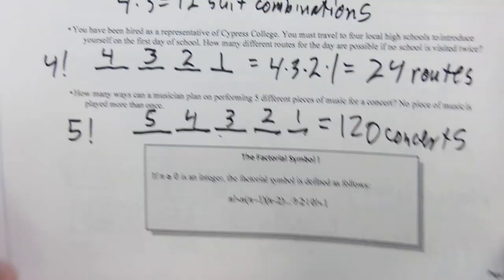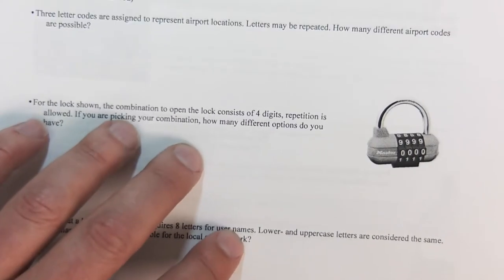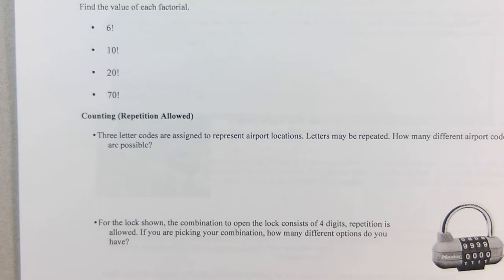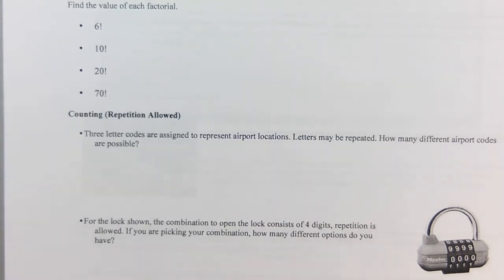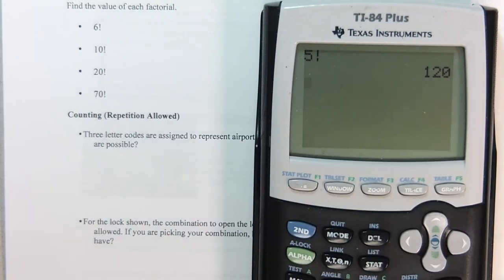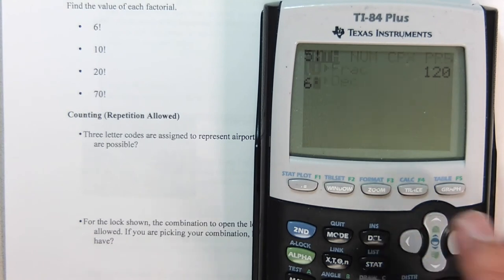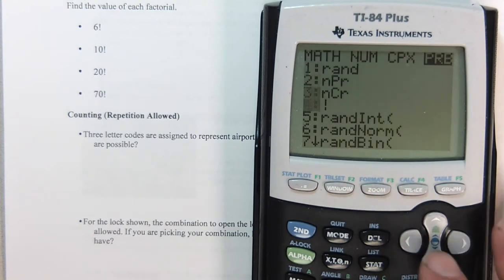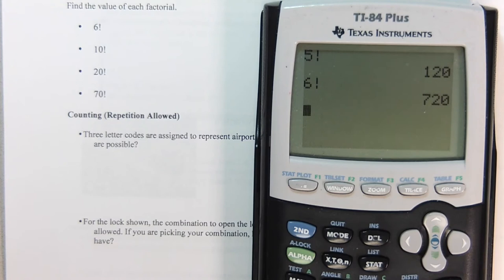So let's do some practice. For 6 factorial, that's going to be 6, math, back it up, factorial. It's going to give us 720.